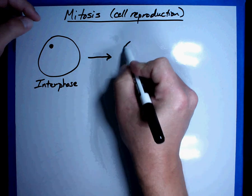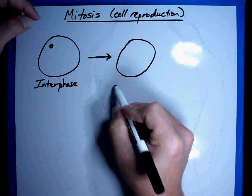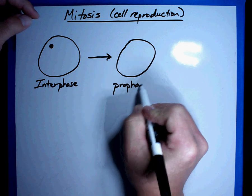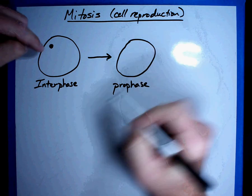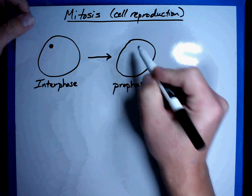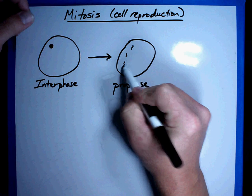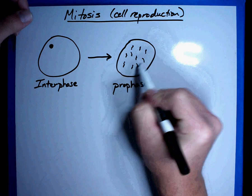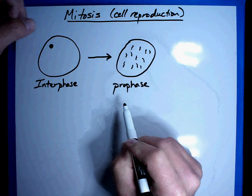The very first thing that happens to this cell is that it now goes into prophase. In prophase, what has happened is the nucleus, now the nuclear membrane breaks up and now you start seeing the DNA in the cell. It's all just visible in the cell and it's just filling up the cell.